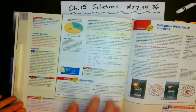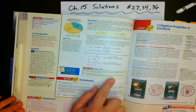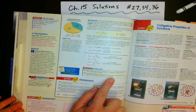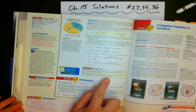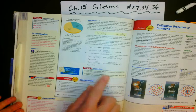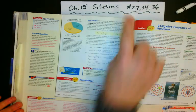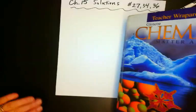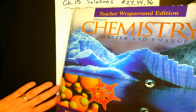I'm going to work on problem 27. It's a little lengthy with the math. I'm going to start with that one, and then if I can squeeze it in, I'll do 34 and 36 as requested. So this is chapter 15 in your textbook, Chemistry, Matter, and Change.